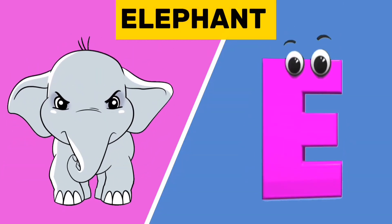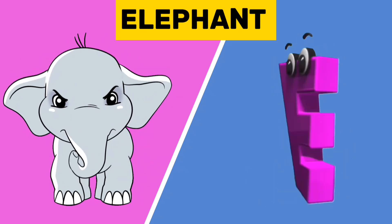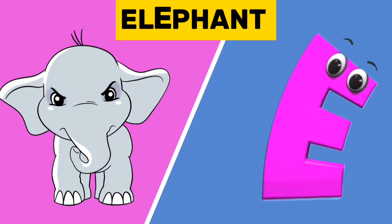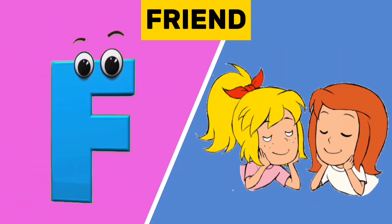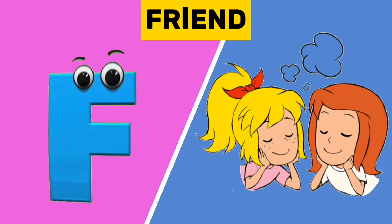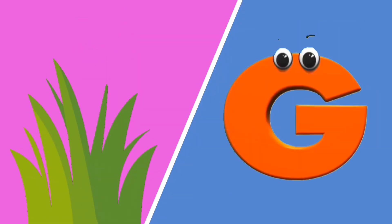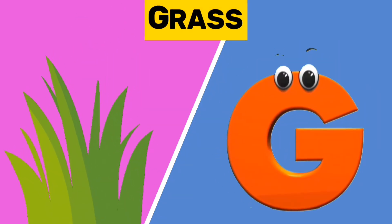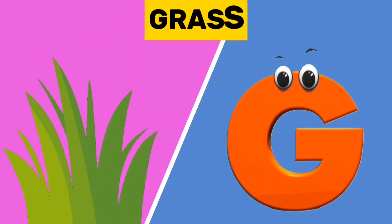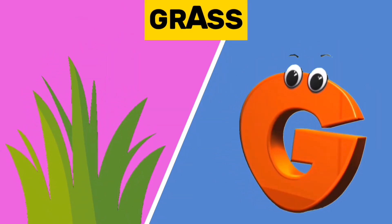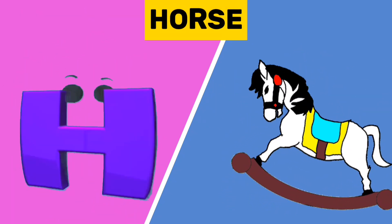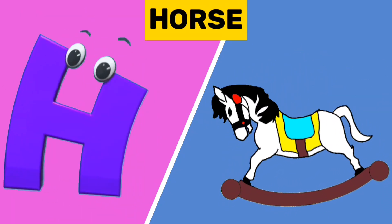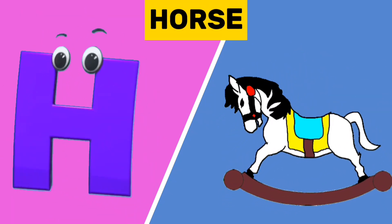E is for elephant. E, e, elephant. F is for friend. F, f, friend. G is for grass. G, g, grass. H is for horse. H, h, horse.